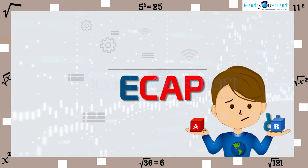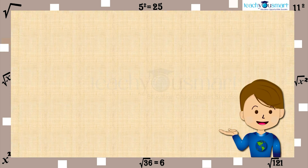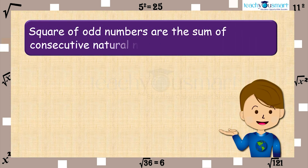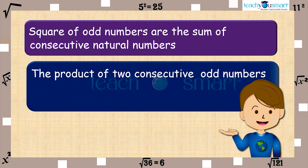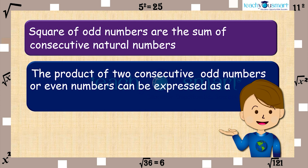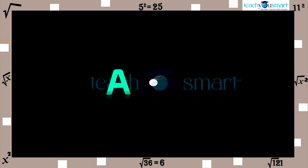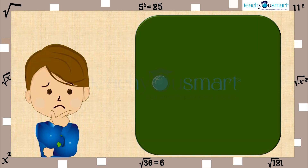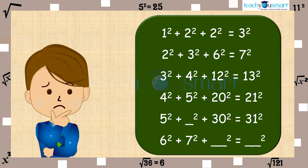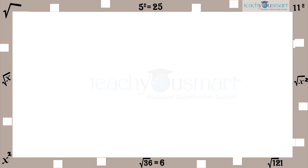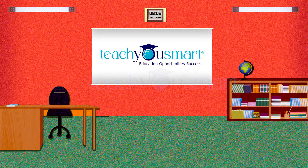We have discussed some interesting patterns: the square of odd numbers as the sum of consecutive natural numbers, and the product of 2 consecutive odd or even numbers expressed as a perfect square minus 1. Before winding up, I will give an activity to you — observe this pattern carefully and try to find out the missing numbers. That's all for now. See you all in the next class.